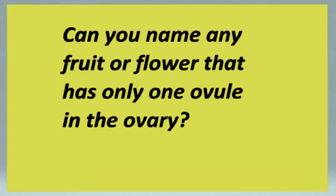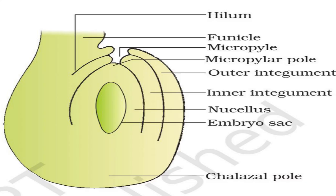The ovule is a small oval structure attached to the placenta by a stalk called the funicle. The junction between the funicle and the ovule is called the hilum.